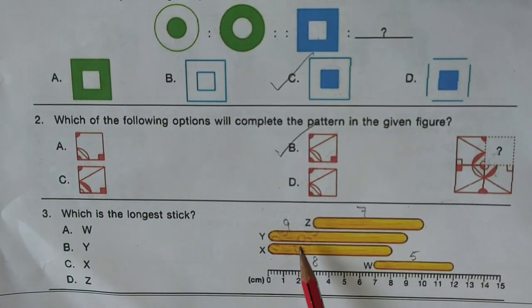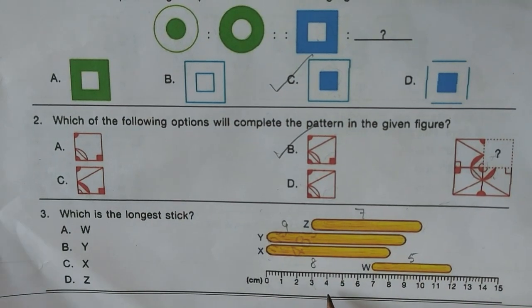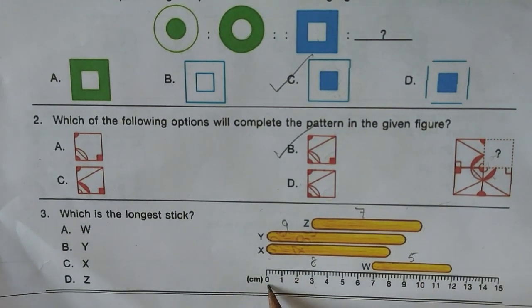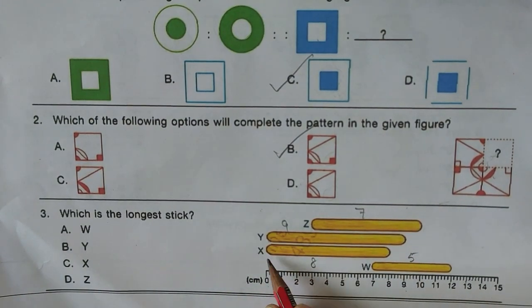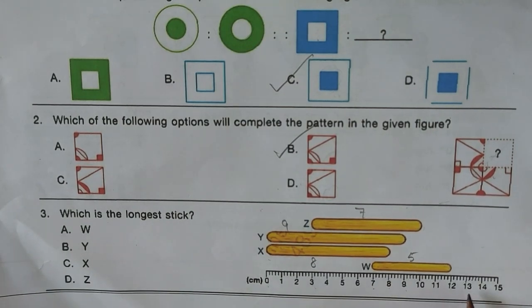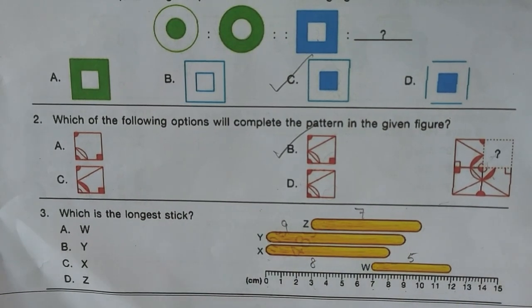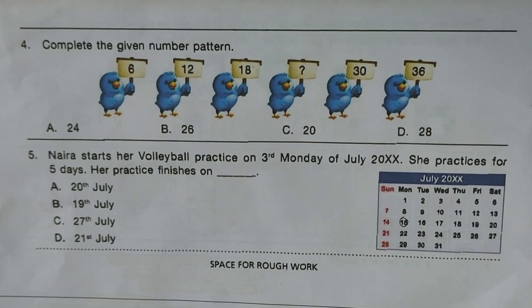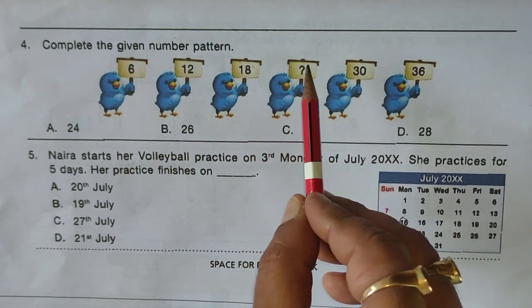Next question: which is the longest stick on the centimeter scale? Z starts at 3 and ends at 10 — that's 7 cm. Y starts at 0 and goes to 9 — that's 9 cm. X starts at 0 and goes to 8 — that's 8 cm. W starts at 7 and goes to 12 — that's 5 cm. Y is the longest. Answer B is correct.